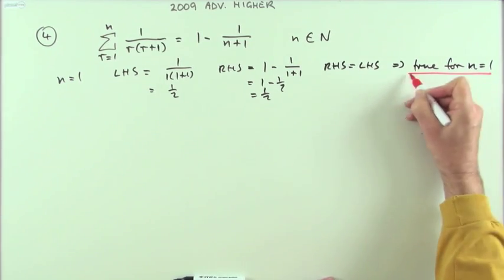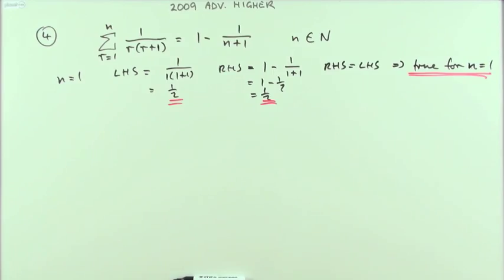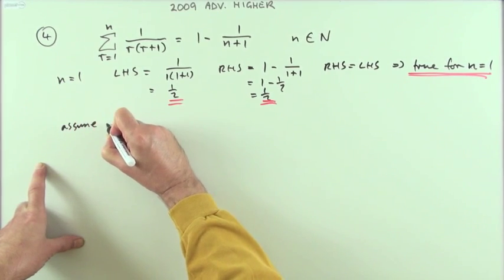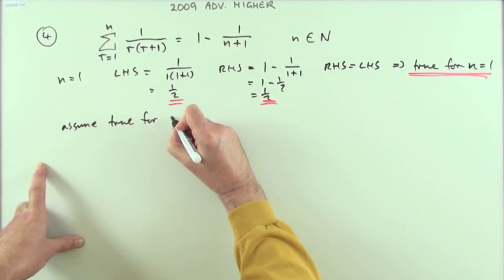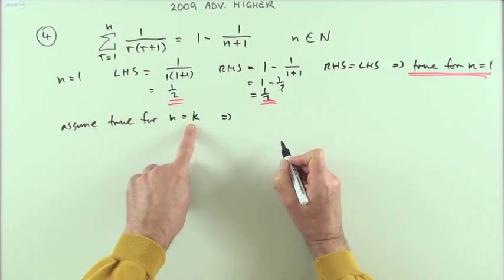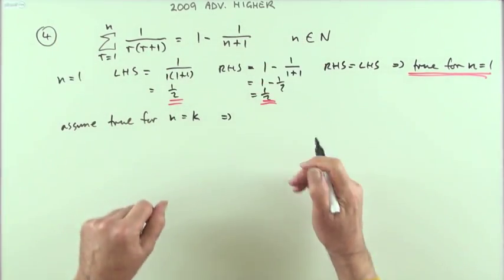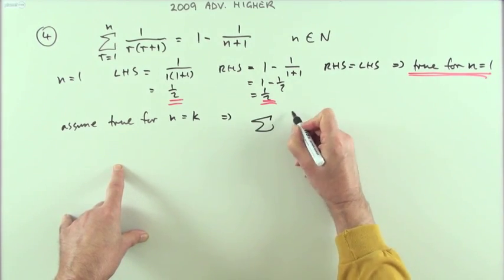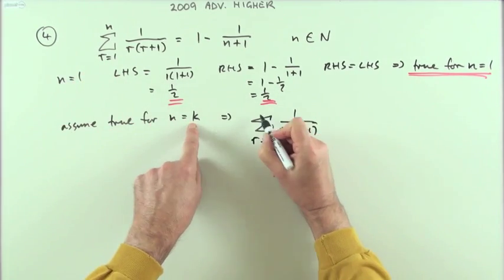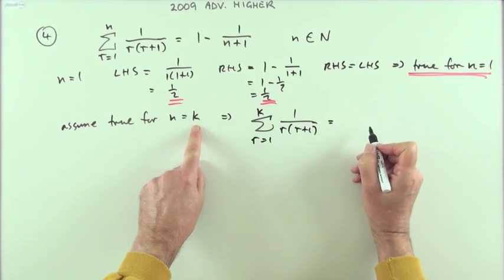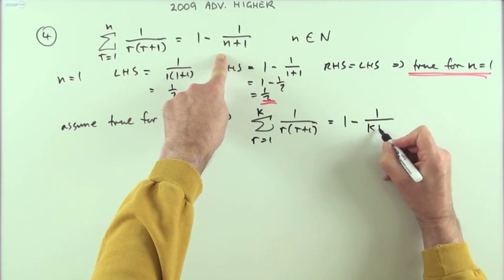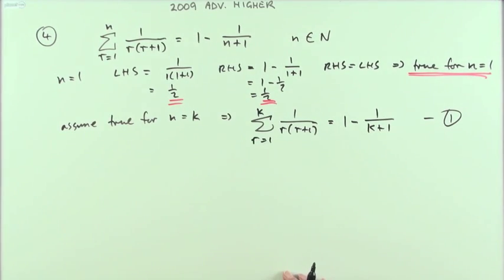That's an important part of proof by induction: showing that it's true at the start. The next step is, let's just leap in somewhere further along. Let's assume that it's true for some other n anywhere at all, n equals k. If that were the case, then simply replacing all the n's by k's, I'd have this statement which I'm going to say is true. That means if I take one over this expression r(r+1) and go all the way from r equals one to k this time, when n is k this expression will be true, so it will equal one minus one over k plus one.